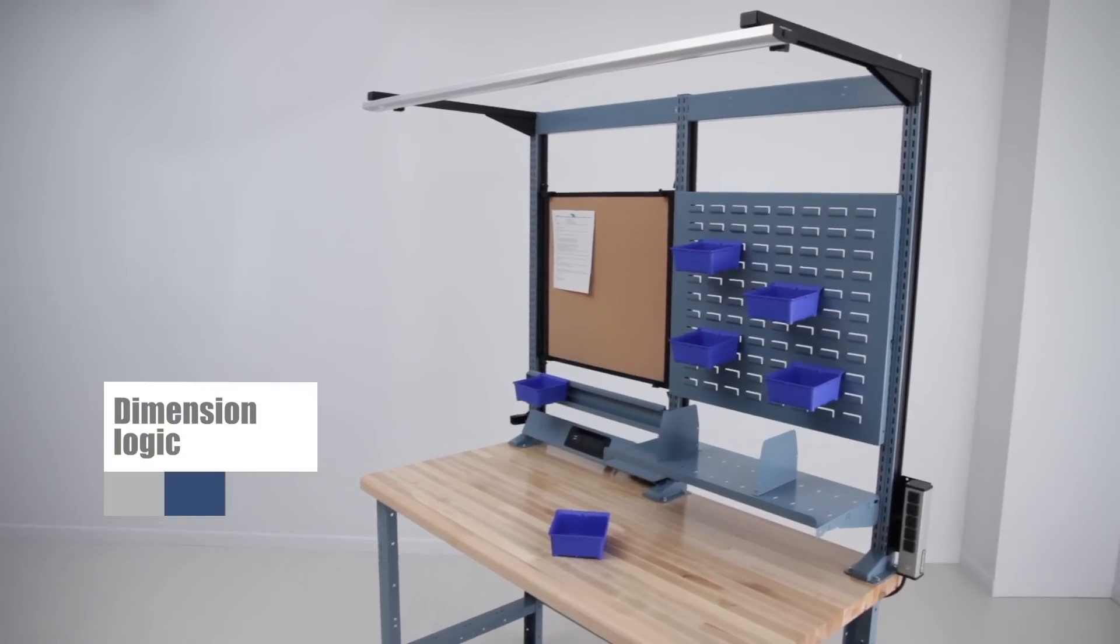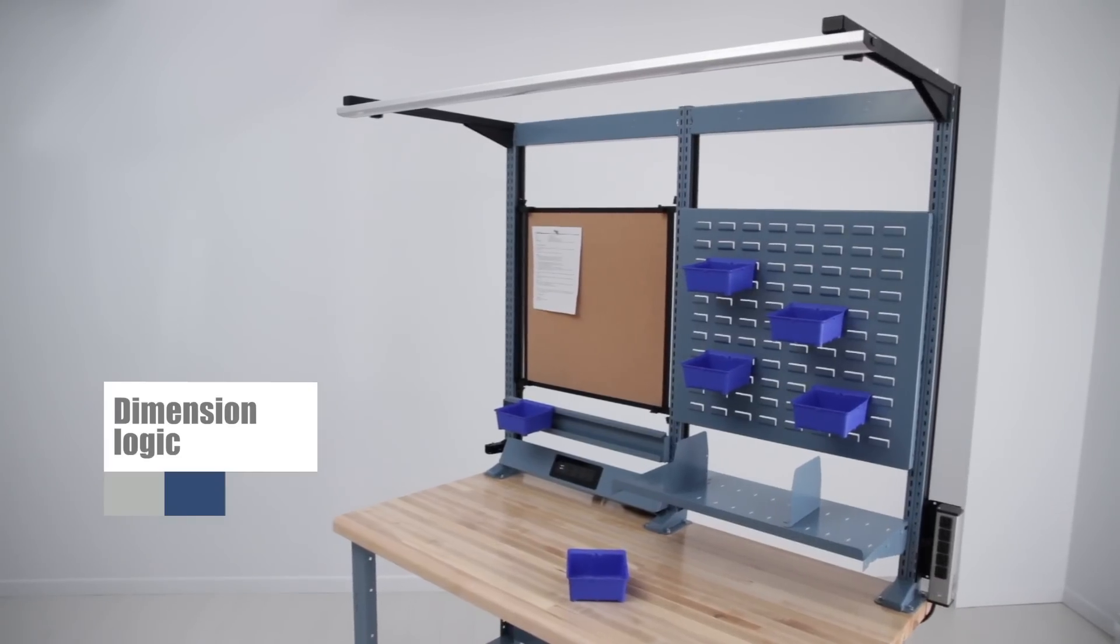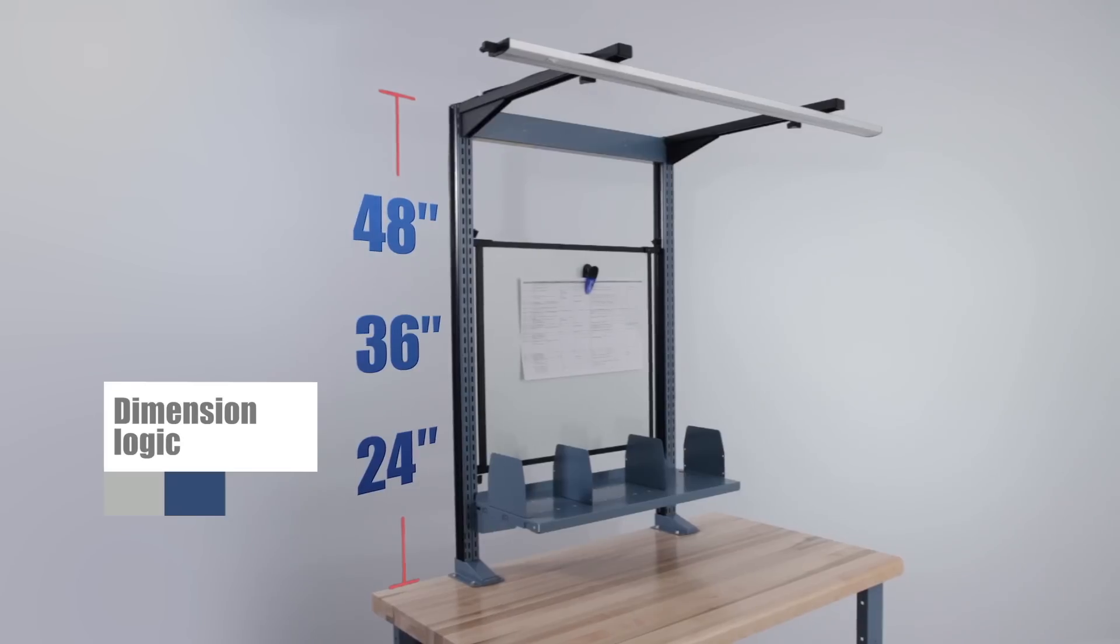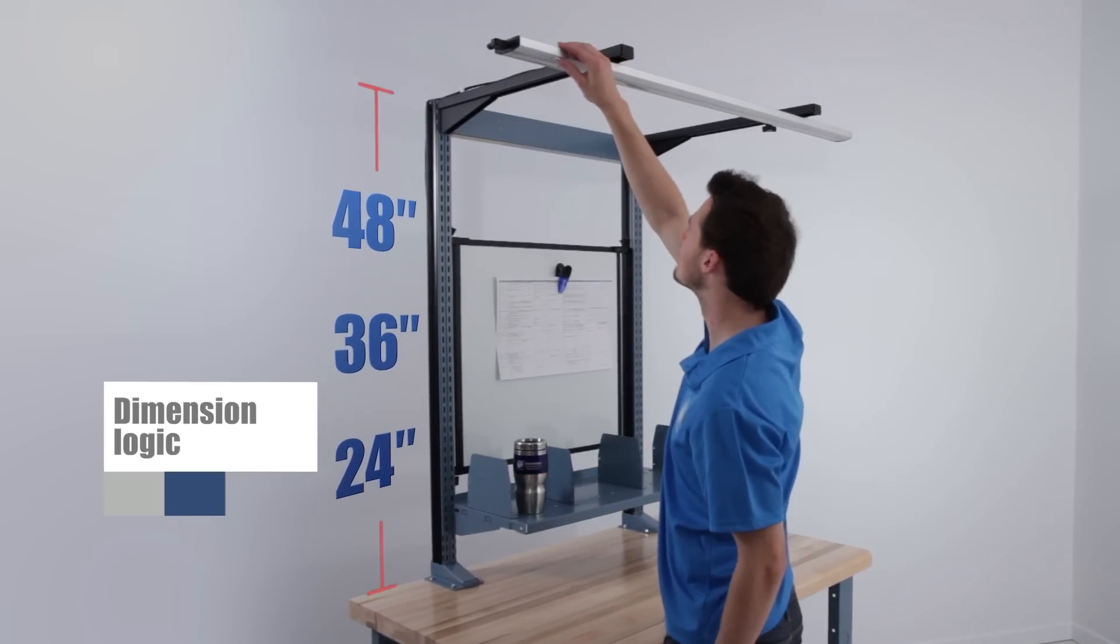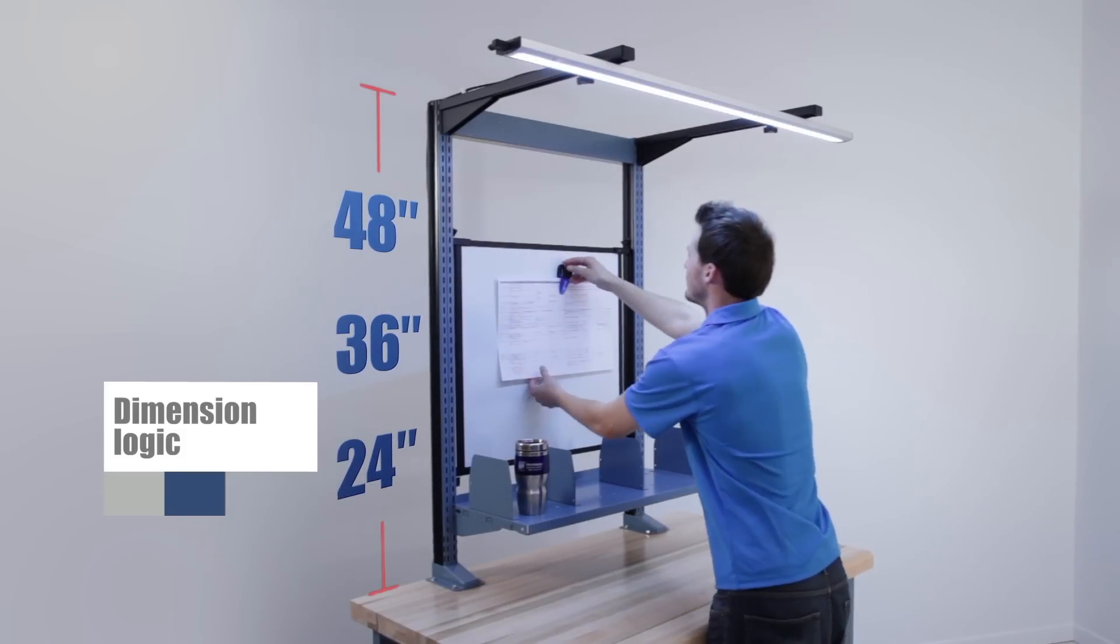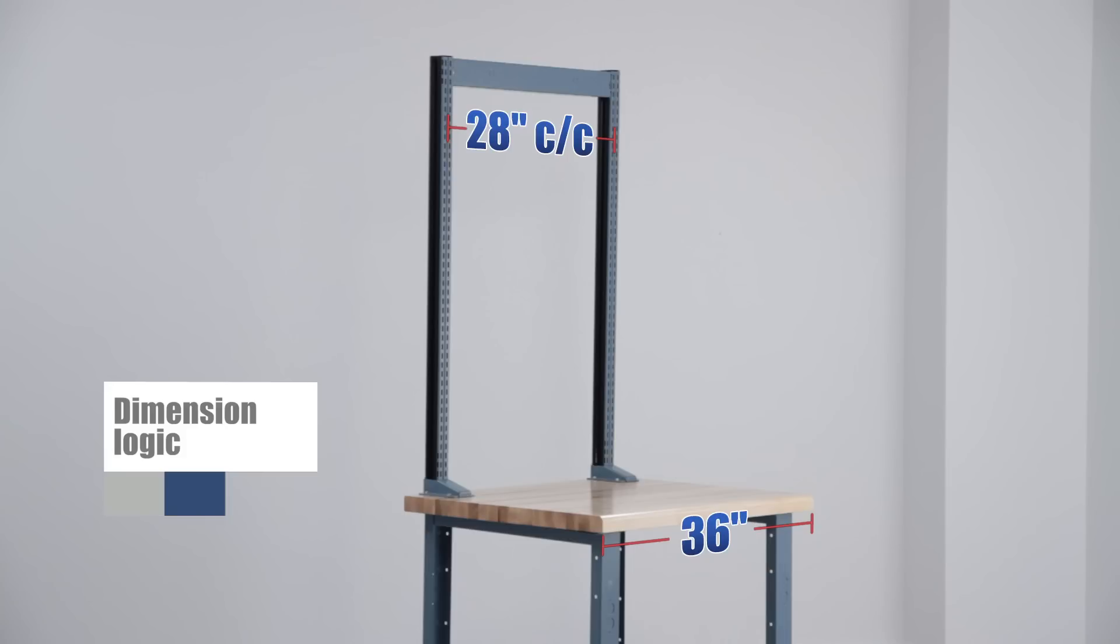Let's begin with the available dimensions to better understand the possibilities. Rousseau offers several frame dimensions. For the height, you have a choice of 24, 36, and 48 inches. This last one is the ideal height for overhead accessories such as lights.